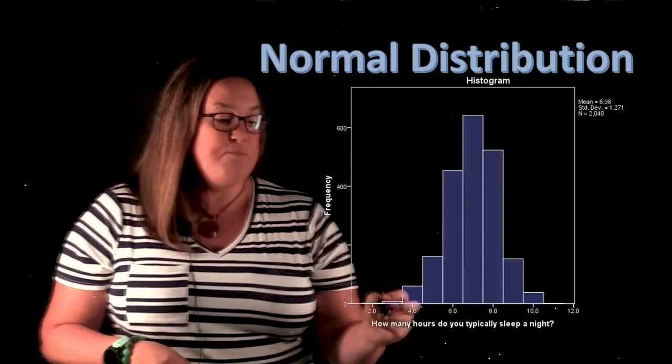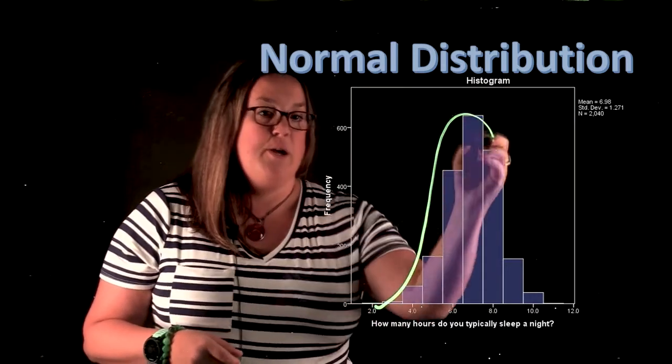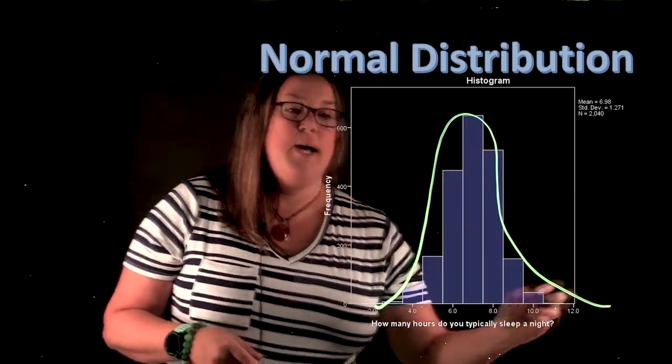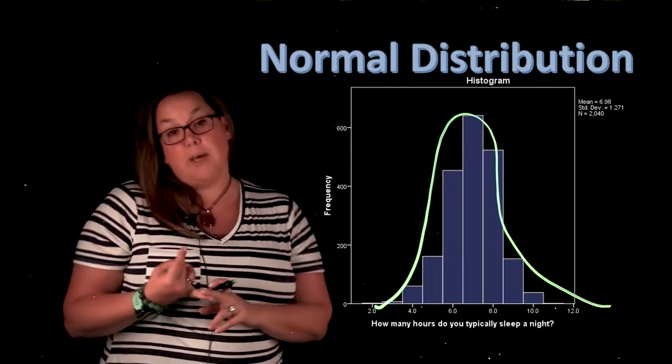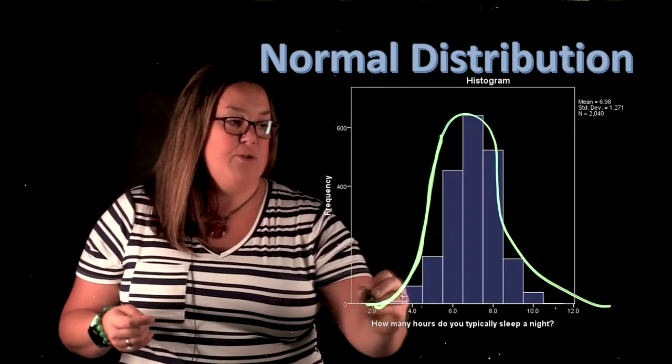So here, a couple of things I want you to notice about the normal distribution. It has a bell shape. See, this looks like a bell. So we would call this a bell-shaped distribution.